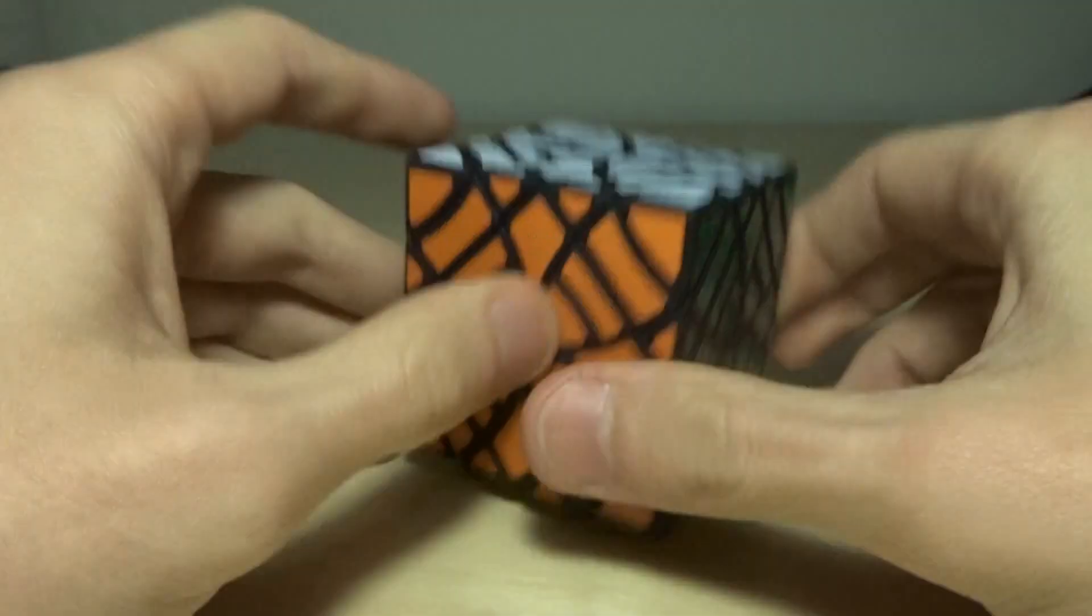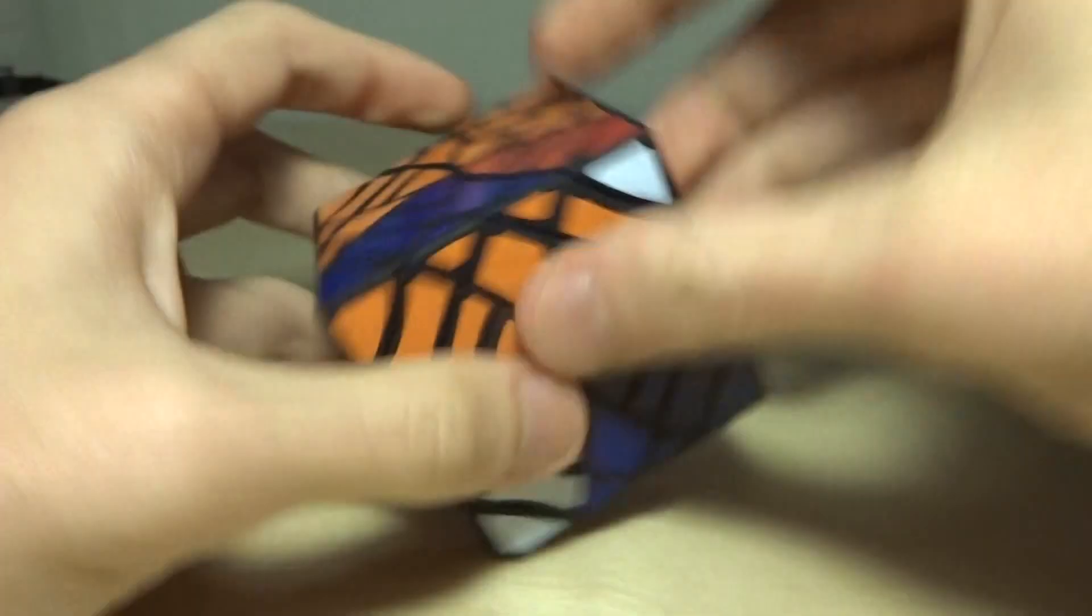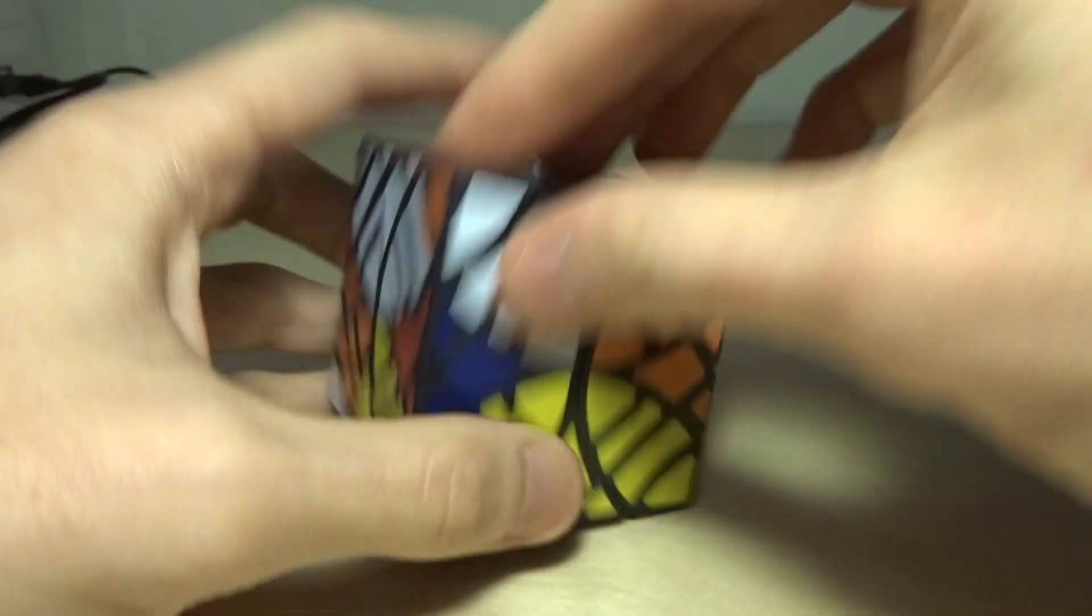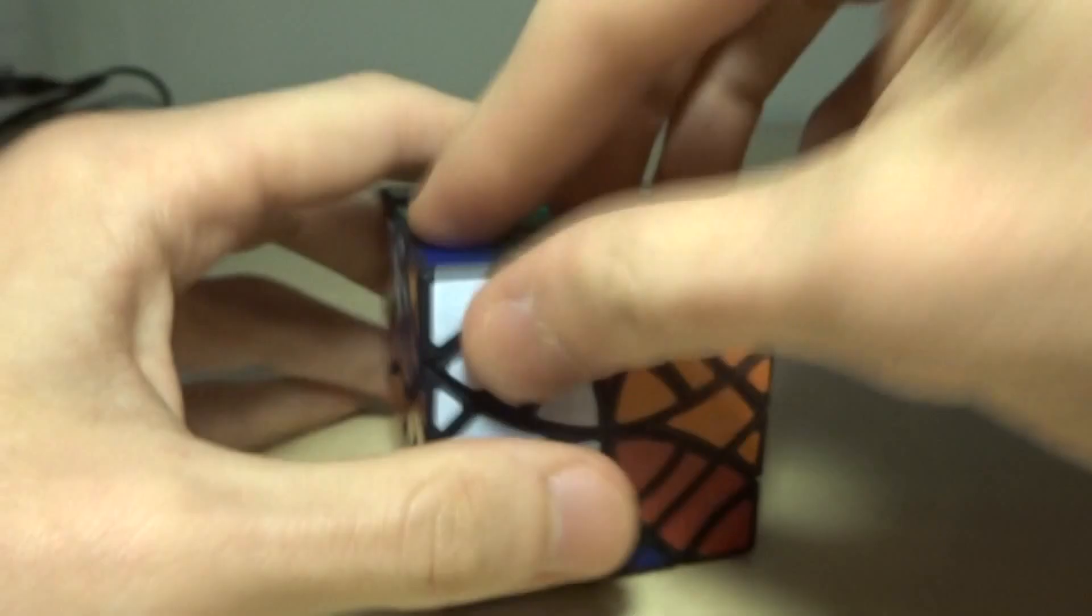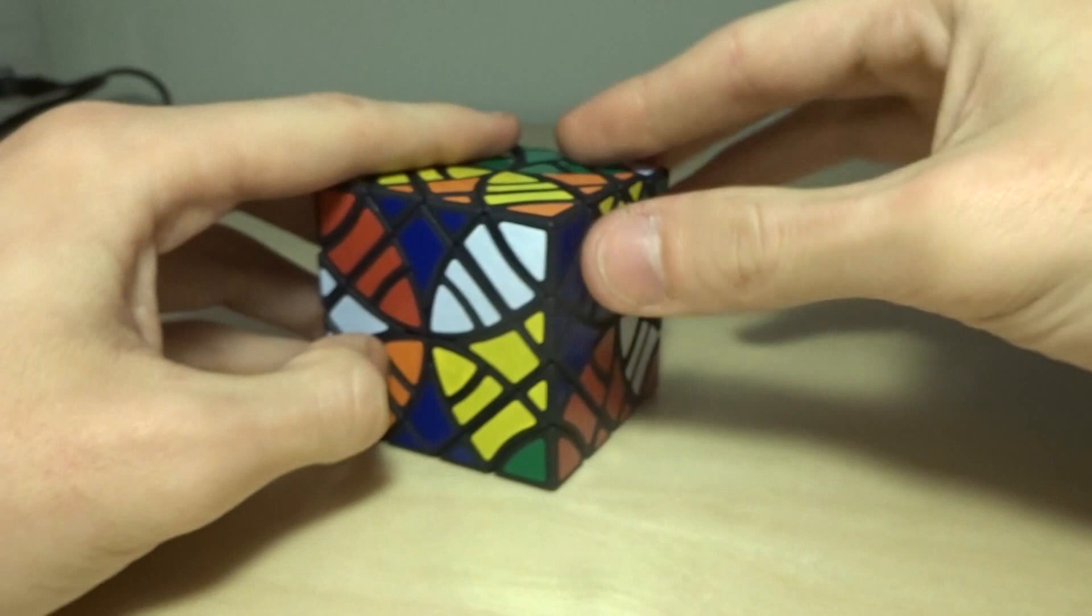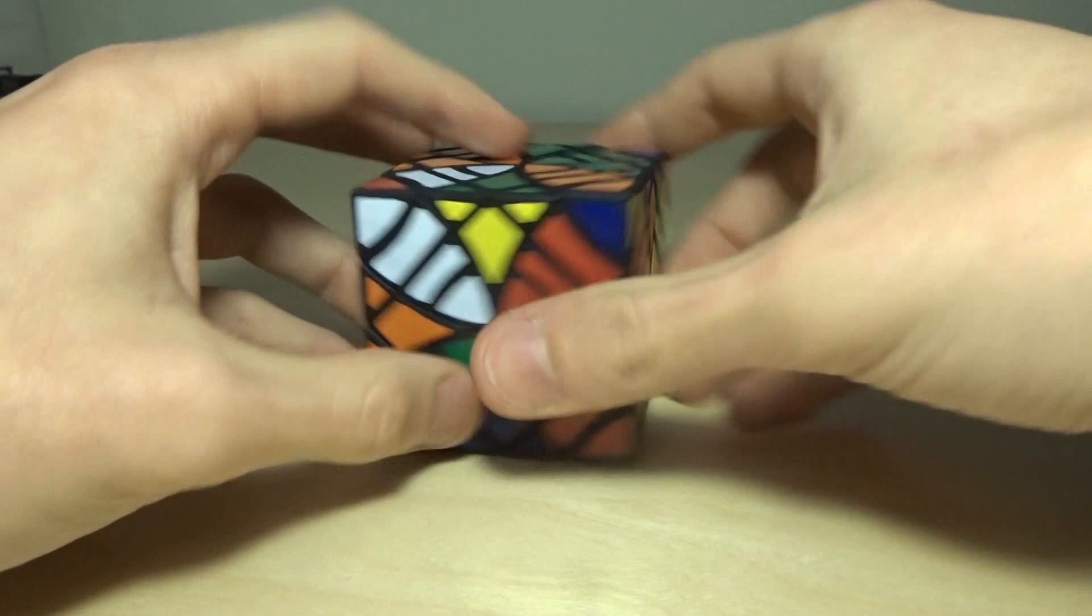So yeah. I think that's it. I'm just gonna scramble it now, because I just know you guys are dying to see this puzzle scrambled. I'm going to begin scrambling it like... Sorry, my phone just rang. Like a normal Curvy Copter. And this is what it looks like when you just do normal Curvy Copter turns. And now like a Skewb.